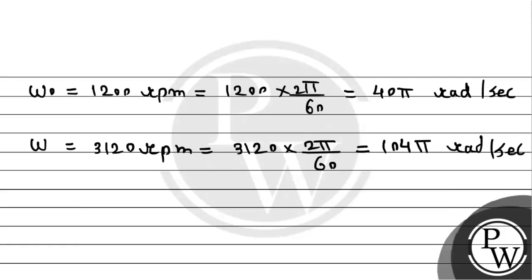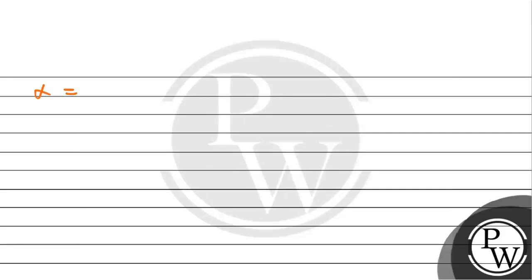Now we use the first equation of rotatory motion. Since we need to calculate the angular acceleration, alpha equals omega minus omega naught divided by t. Substituting the values, we get final angular velocity 104π minus initial 40π divided by time taken 16 seconds.